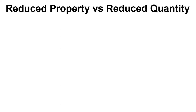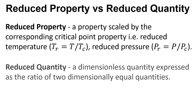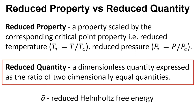We also need to think about a distinction between a reduced property and a reduced quantity, because this comes into SAFT. A reduced property is normally defined in terms of the critical property — so the reduced temperature, for example, is temperature divided by critical temperature, and this gets used in various equations of state and models with corresponding states. Whereas a reduced quantity is more something from molecular dynamics — it's a dimensionless quantity expressed as a ratio of two dimensionally equal quantities, and it's this one that we're really interested in when talking about SAFT. The lowercase a with a tilde on top refers to the reduced Helmholtz free energy.